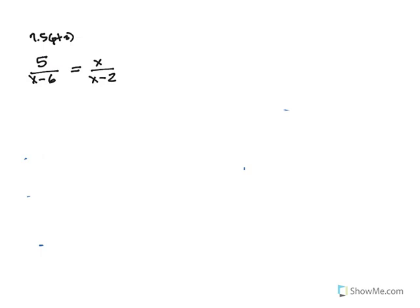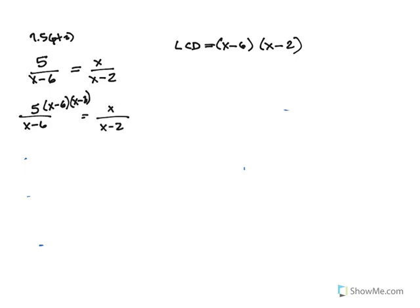5 over x minus 6 equals x over x minus 2. We want to clear these fractions by finding the LCD. The LCD here would just be x minus 6 times x minus 2. We multiply every term by that LCD. Then we cancel — x minus 6 cancels, so 5 times x minus 2 is left. x minus 2 cancels with x minus 2, so x times x minus 6 is left.